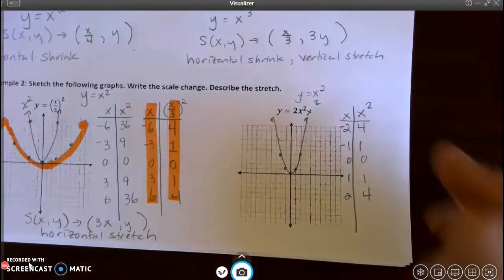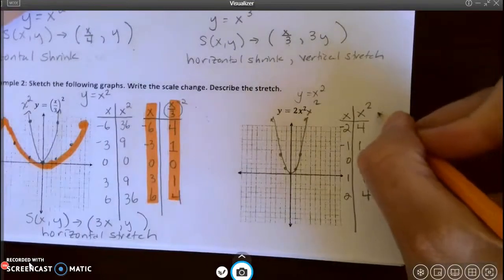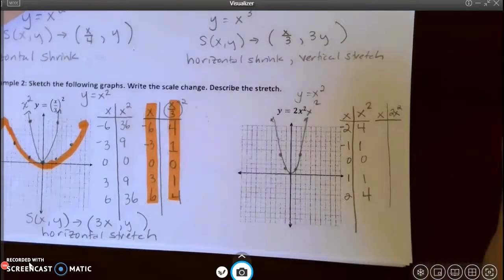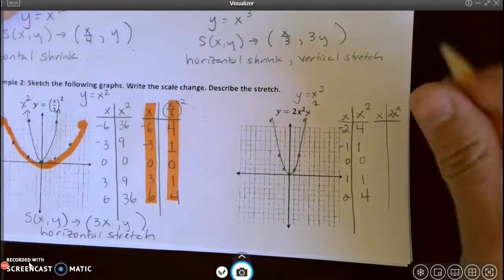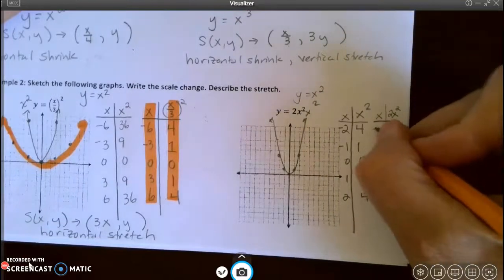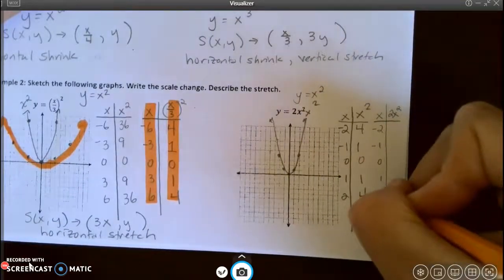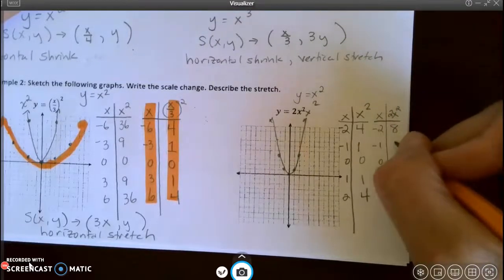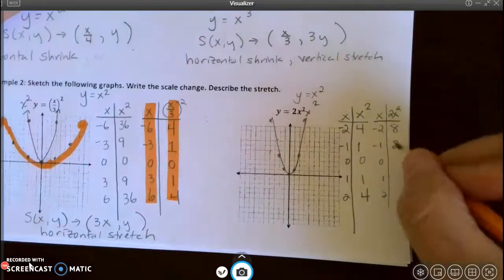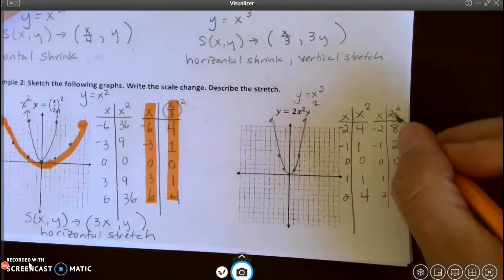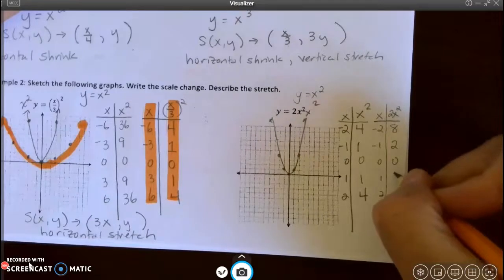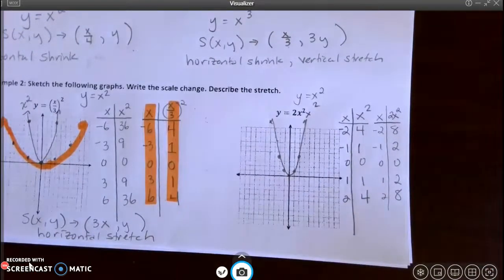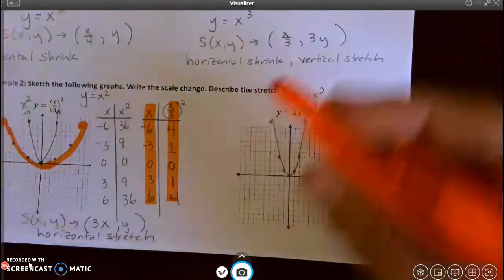And now I'm going to do my scale changed one. Now, remember, we square the x and then we multiply by 2. So 4 times 2 is 8. 1 times 2 is 2. 0 times 2 is 0. 2 times 1 is 2. 2 times 4 is 8. And this is going to, once again, be my scale changed.